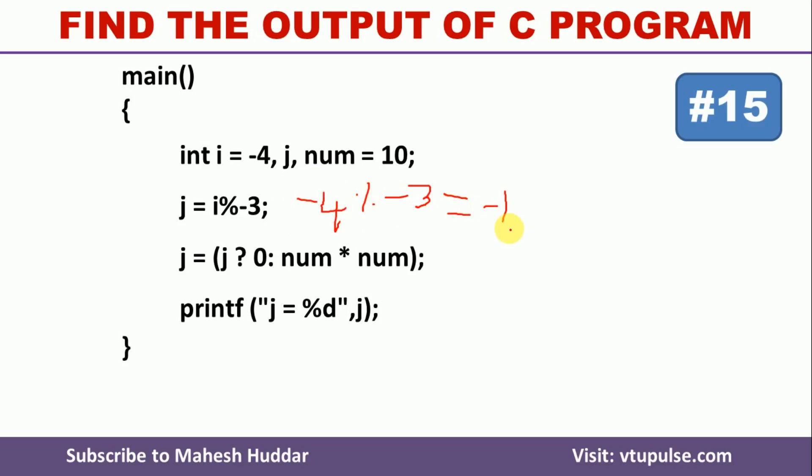So in this case, it is minus 1 here. That is, j is equivalent to, in this case, it will be minus 1.